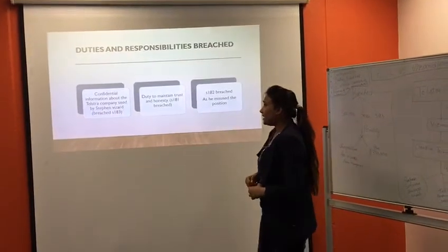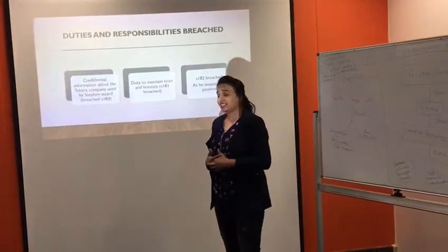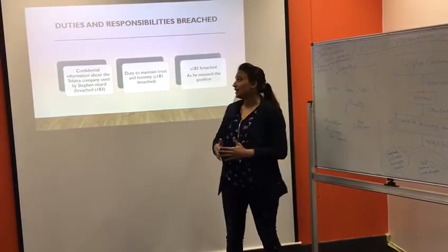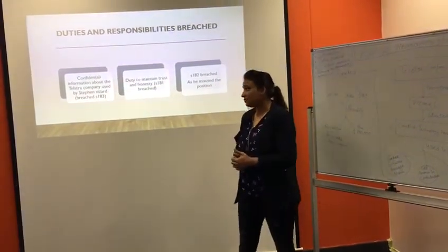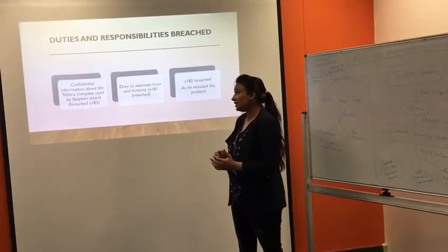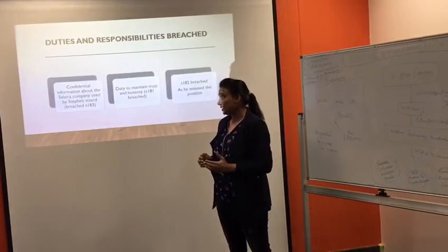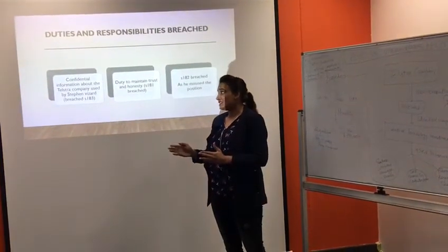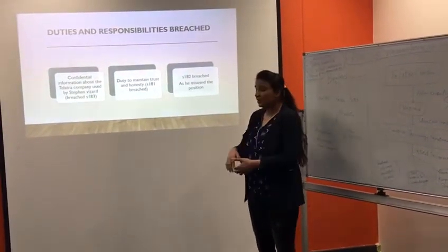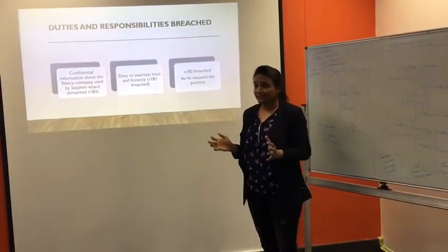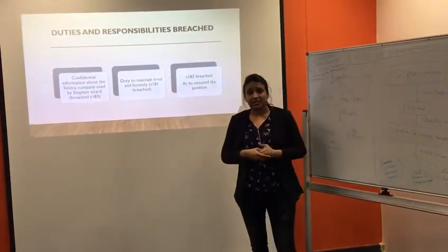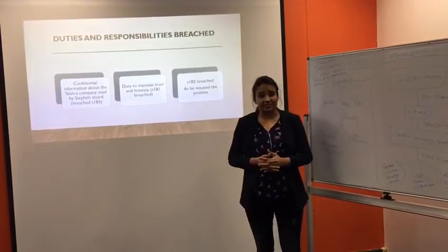In section 183, he had proper authority to access information, but he misused this information and shared it with a third party, which constitutes a breach of section 183. In section 182, he had a lot of responsibility and authority and was required to maintain his position properly, but he misused his position as well.